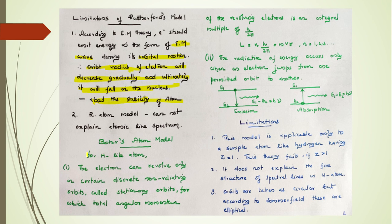See the Bohr's atom model for hydrogen-like atom. The electron can revolve only in certain discrete non-radiating orbits called stationary orbits, for which the total angular momentum of the revolving electrons is an integral multiple of H by 2π. The radiation of energy occurs only when an electron jumps from one orbit to another, so the difference in energy takes the value as H nu. Important limitations: Bohr's atom model is applicable only to simple atoms like hydrogen having Z equal to 1, so this theory fails if Z is greater than 1. It does not explain the fine structure of spectral lines in hydrogen atom. The orbits are taken circular, but according to Sommerfeld, these are elliptical in structure.